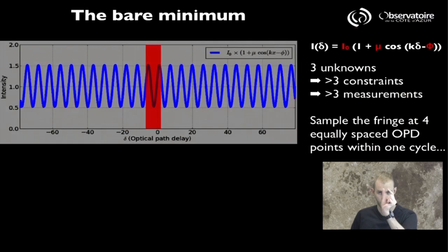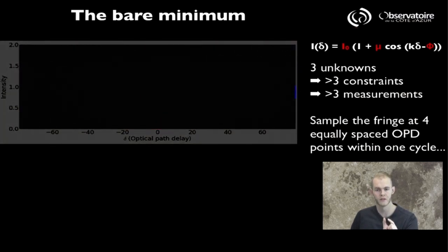And we're going to look in detail at one of these cycles. And instead of trying to continuously extract fringe information, what if we were to design a combiner that extracts information at four specific OPD points, points of optical path difference, that are equally spaced within one wave cycle. The reason why you want to do four is simply a matter of number of constraints versus number of unknowns.